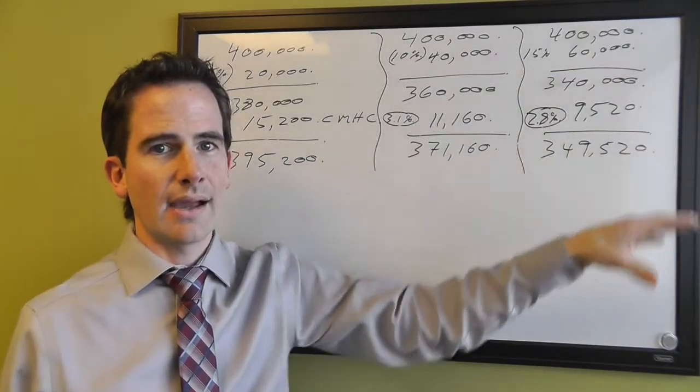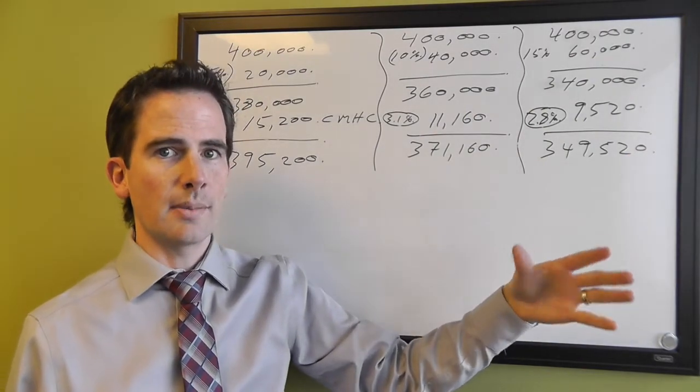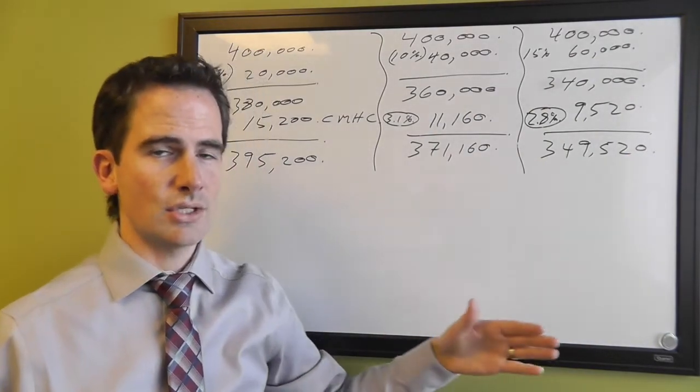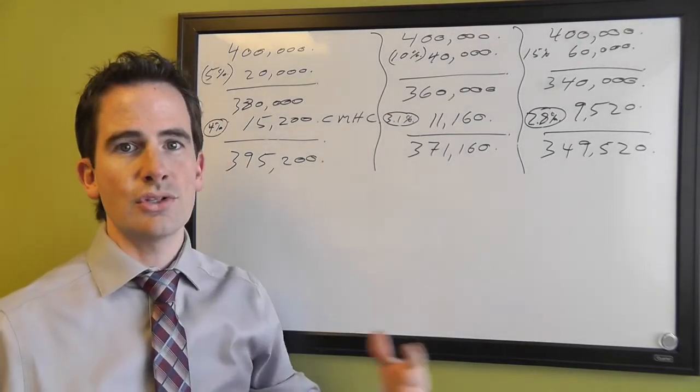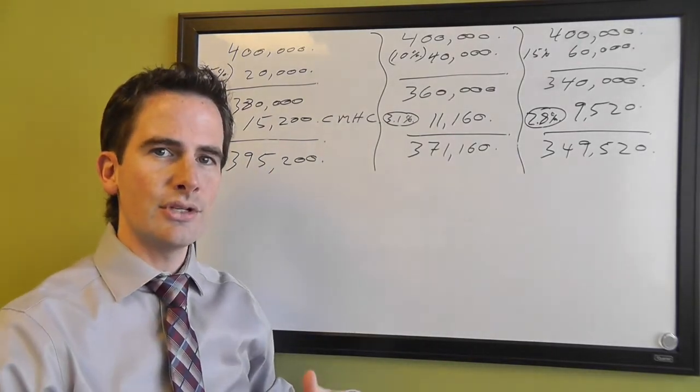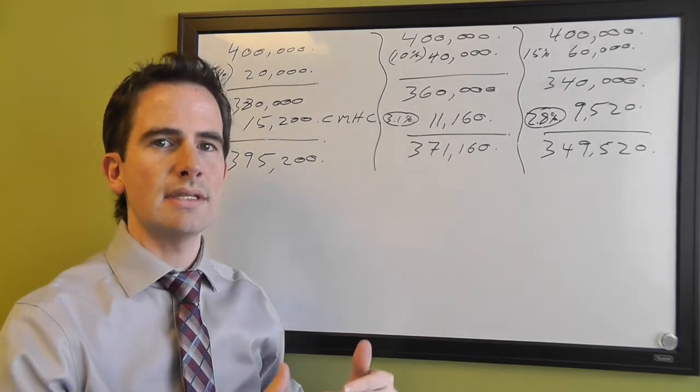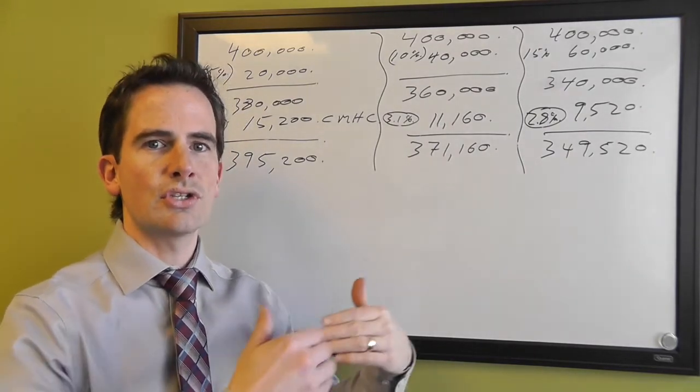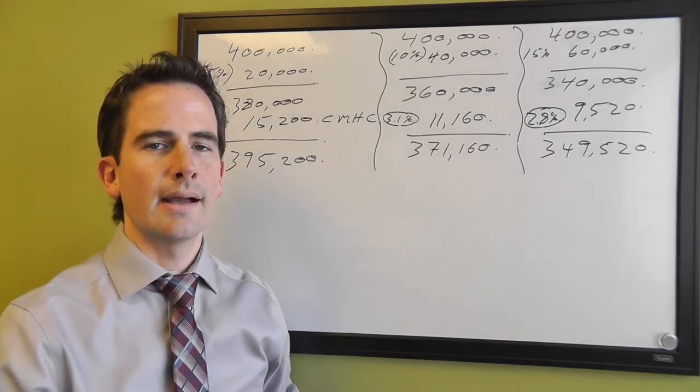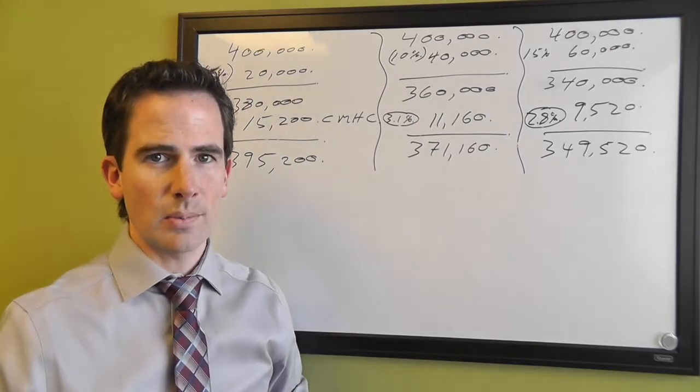Of course, if you put 20% down, there is no CMHC premium because you don't need CMHC when you put 20% down. This just allows you to buy the house sooner than later so that you can benefit from the increases in the value of the house starting today versus starting in the future once you've saved up the 20% down.